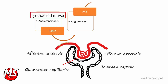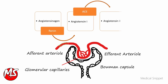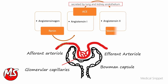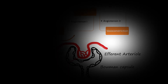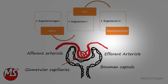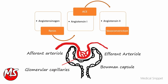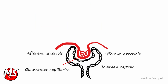Angiotensin 1 is converted into angiotensin 2 by angiotensin converting enzyme, located in the endothelium. Angiotensin 2 in turn acts on efferent arterioles and constricts them, so that resistance increases at the efferent arteriole.